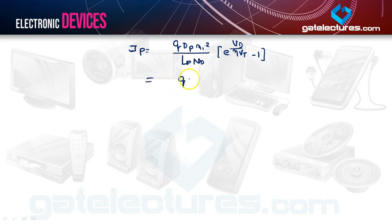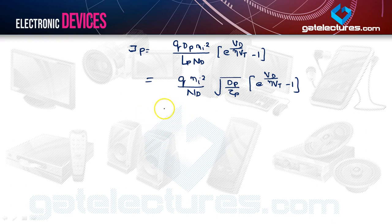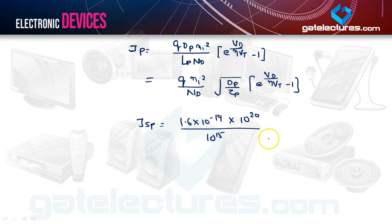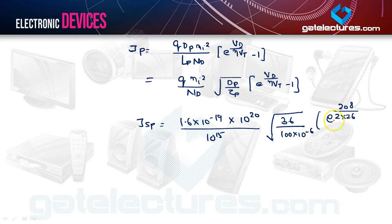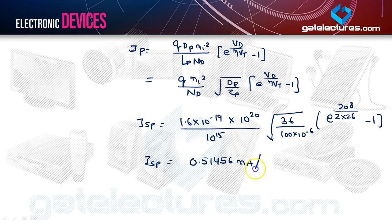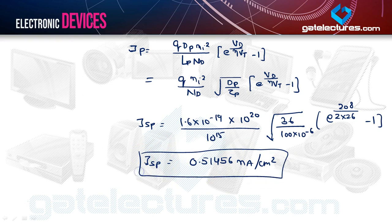Plugging in all values: Q = 1.6×10⁻¹⁹, NI² = 10^20, ND = 10^15, sqrt(36 / (100×10⁻⁶)), and e^(208 / (2×26)) − 1, with η = 2 for silicon. Solving, we get JP = 0.51456 nA/cm². This is the hole current density.